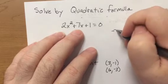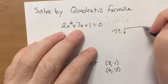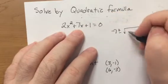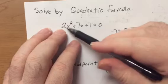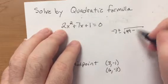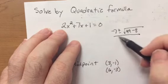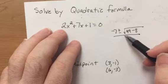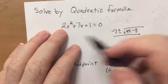So negative b, b is the number in front of x. Plus or minus the square root of b squared, which is 49, minus 4ac. 4 times 1 times 2 is 8. All over 2a. Now notice it's all over. I don't know why my Algebra kids are stopping right here. I'm going to take points out for that.